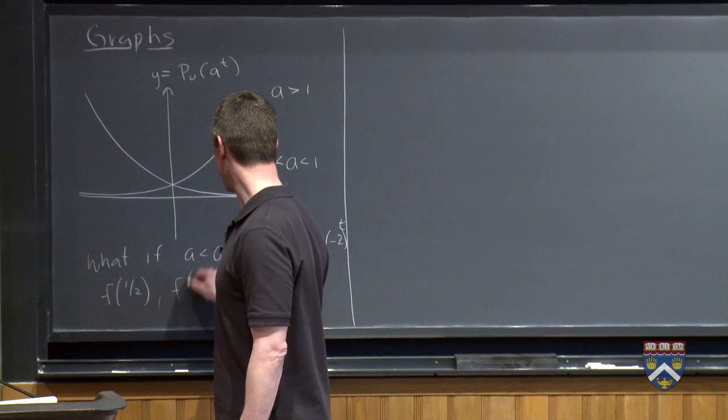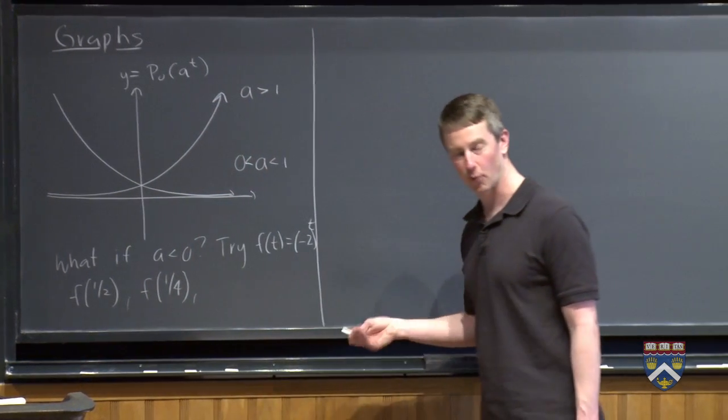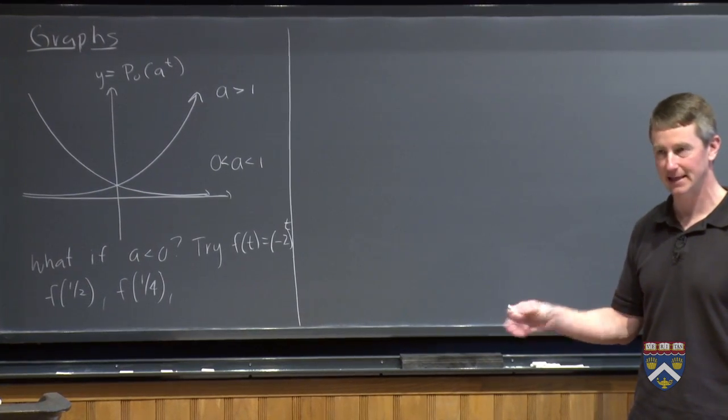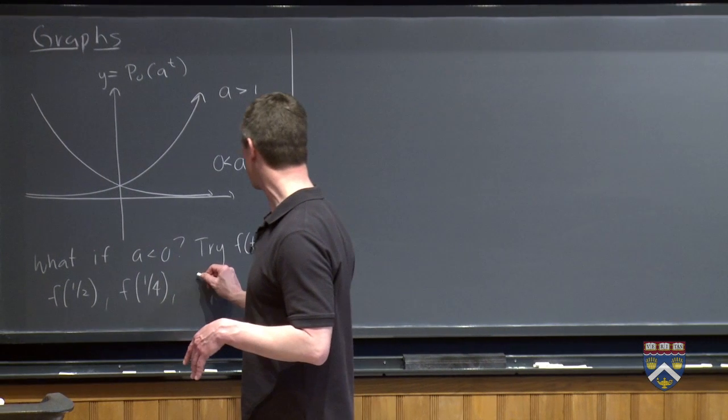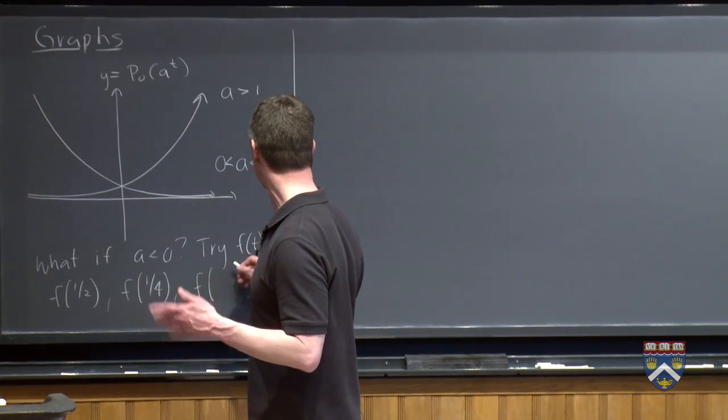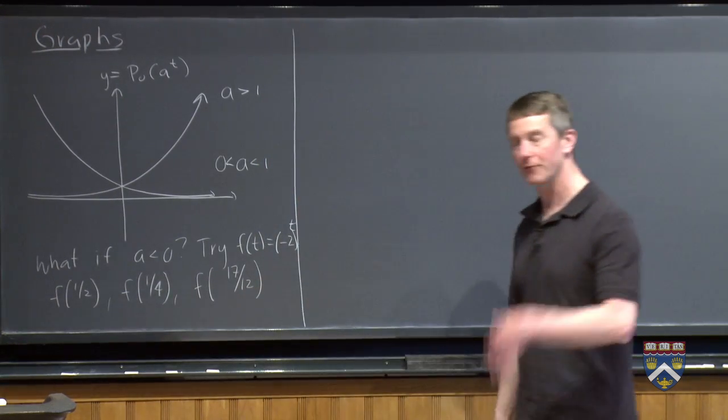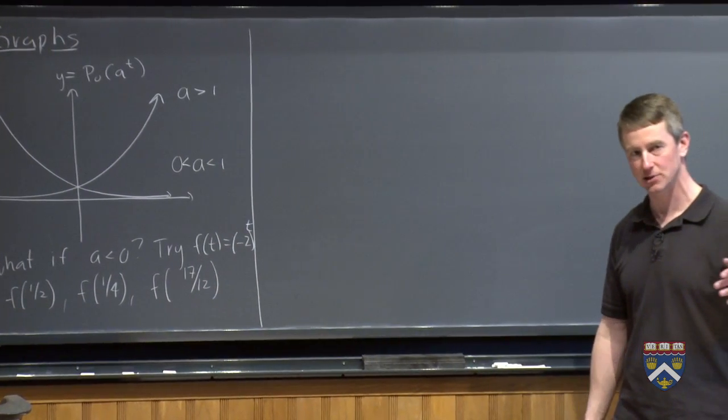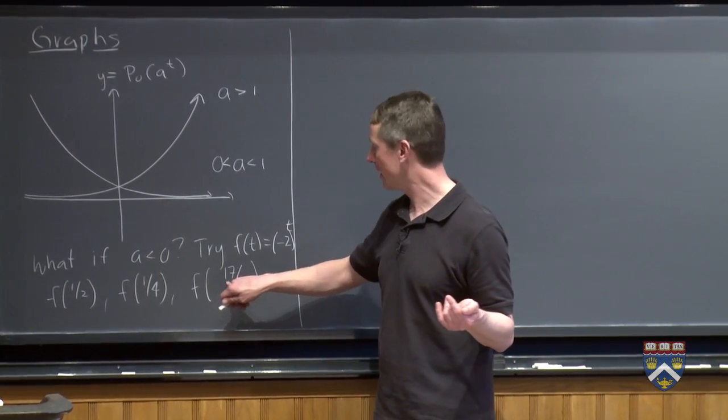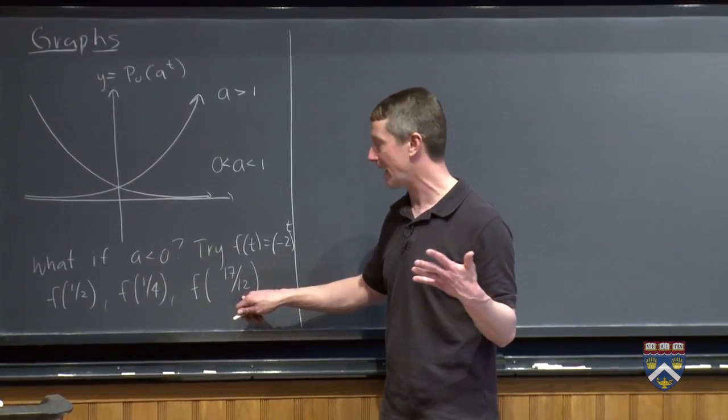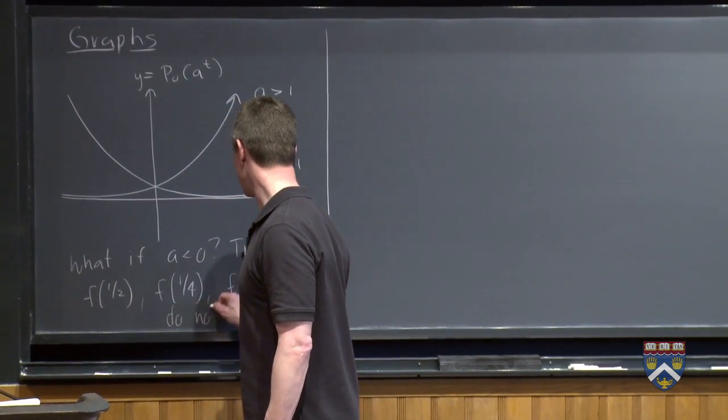And it's not just f(1/2) that doesn't exist. f(1/4) would mean taking the fourth root of a negative number. That's not allowed. f(1/6), f(1/8), f(1/10). And there's even more numbers than that. So, for example, if I were to try f of 17 twelfths, the 17 means I can raise the negative 2 to the 17th power. That's no trouble. But I'm still going to get a negative when I raise to an odd power, and then when I try to take the 12th root of that, all of these don't exist. They are undefined.